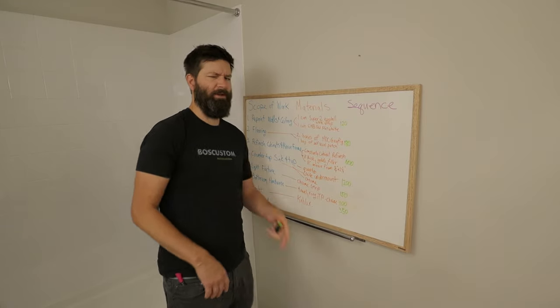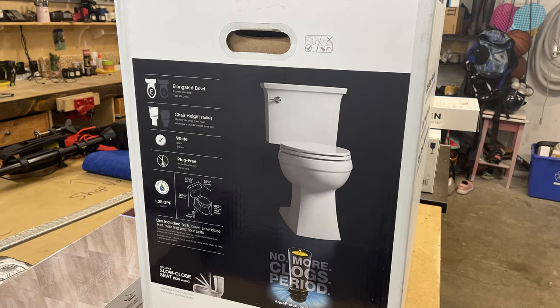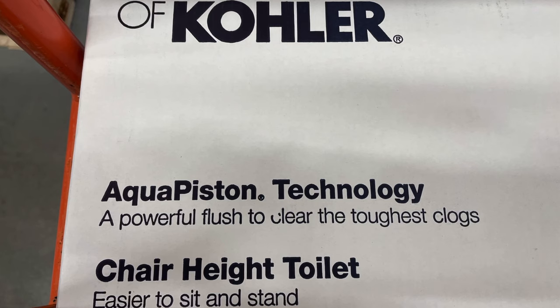Now in terms of the toilet, I'm going to be taking it out to accommodate the flooring. I'm definitely not putting this piece of crap toilet back in. I'm going to be putting in a new toilet. I already put in a new toilet on the main floor. It was a Kohler toilet. It's an awesome toilet. It was 350 bucks.